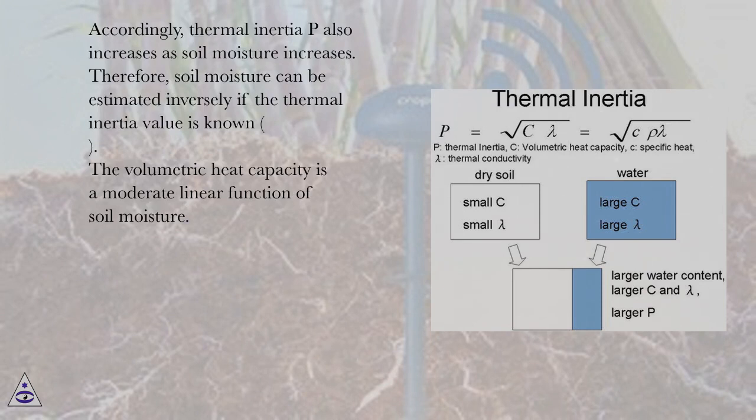Accordingly, thermal inertia P also increases as soil moisture increases. Therefore, soil moisture can be estimated inversely if the thermal inertia value is known. The volumetric heat capacity is a moderate linear function of soil moisture.